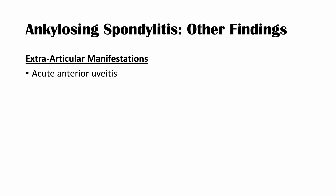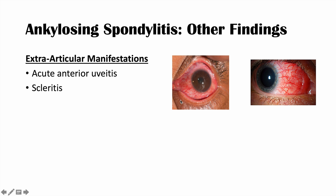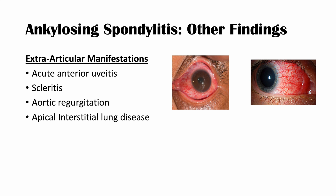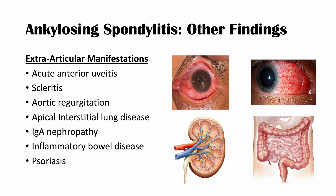There are extra-articular manifestations due to the inflammatory nature of ankylosing spondylitis. These include acute anterior uveitis — inflammation of the uvea layer of the eye — and scleritis, showing reddened erythematous areas on the sclera. Aortic regurgitation is a potentially severe manifestation that can cause structural heart changes. Apical interstitial lung disease, IgA nephropathy affecting the kidneys, inflammatory bowel disease, and dermatological findings like psoriasis can also occur.